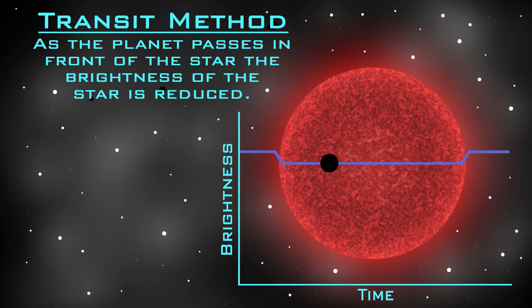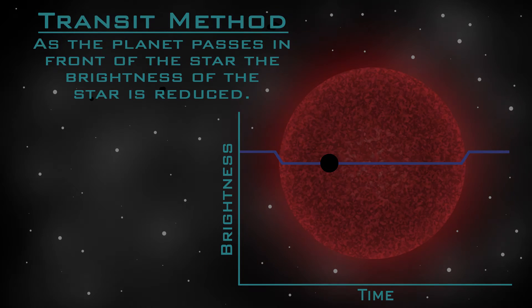Let's talk about the major methods of extrasolar planet detection. The transit method has identified a very large number of extrasolar planets because it is the method used by the Kepler space probe. In this method, the planet actually cuts in front of the star once per orbit, so the existence of the planet is inferred from the periodic dimming of the star.